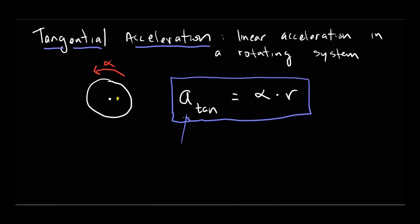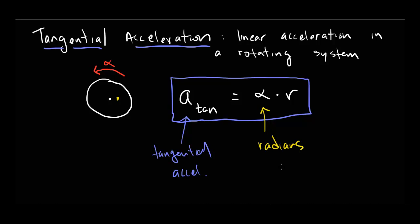Tangential acceleration equals angular acceleration times R. Once again, this will only work if alpha is in radians per second squared. If it's in degrees or revolutions, the equation doesn't work. We need to be in radians for that equation to hold.